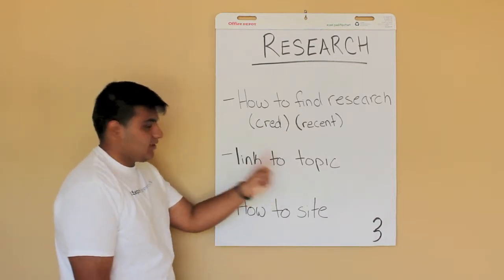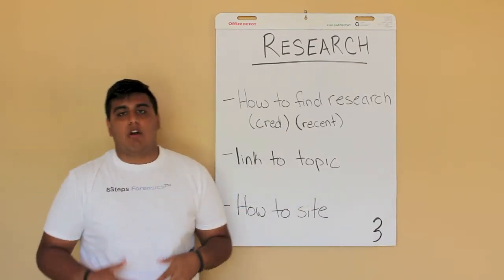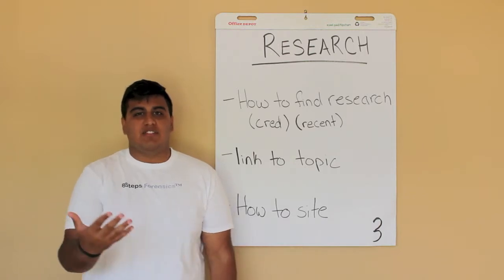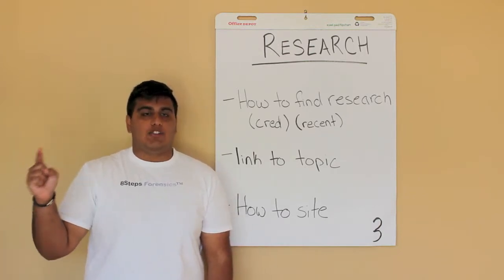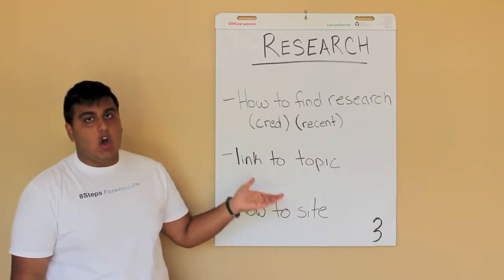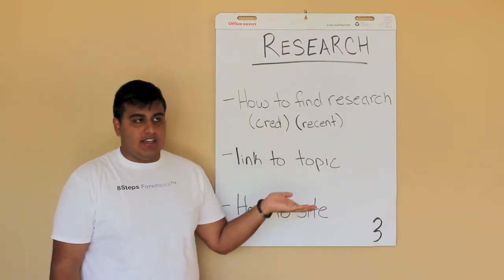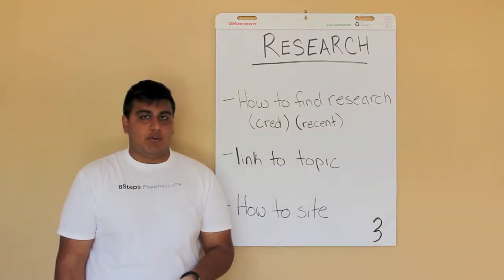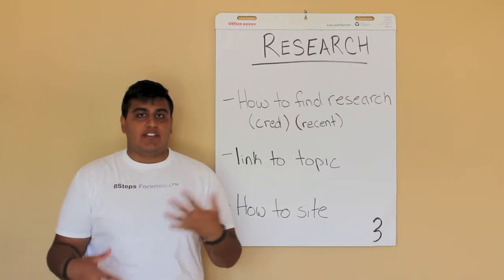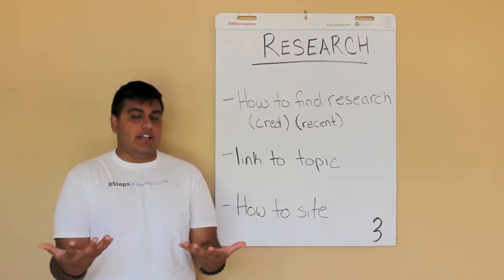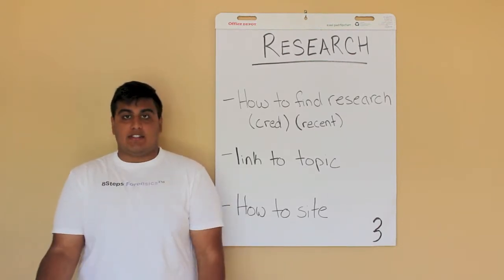It always has to have a link to the topic. A lot of times people throw in research for the sake of having research there and sounding smart when it has no link to what you have to say. Always make sure to think, how does this relate to what I have to say? Is there a transitional phrase or sentence I can put in to properly link what I have to say to my topic?